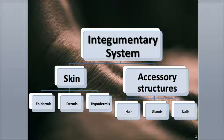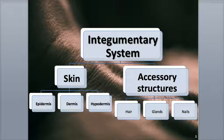The skin is also known as the cutaneous membrane, and it's the largest organ of the body in overall surface area and weight. It covers about 22 square feet of the body's surface and weighs about 10 pounds. It ranges in thickness from very thin — roughly half a millimeter, located in the thin skin of the eyelids — to over 4 millimeters thick, which is found on the heels and soles of the foot.